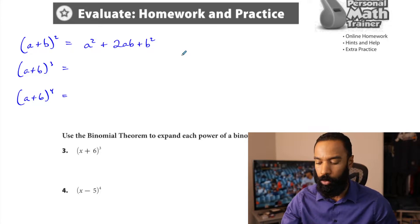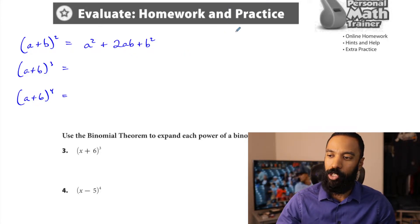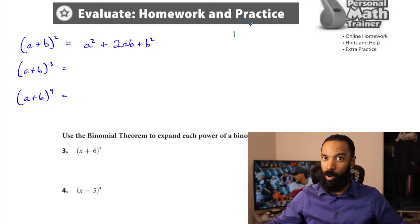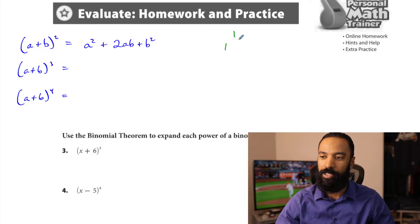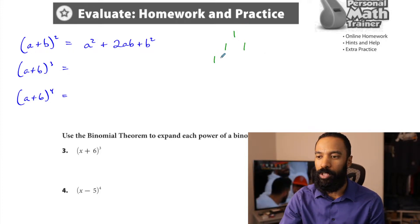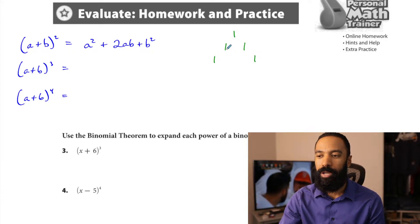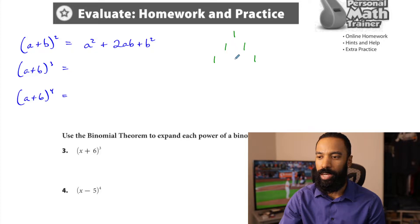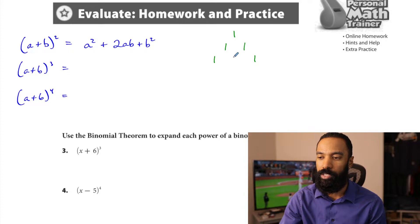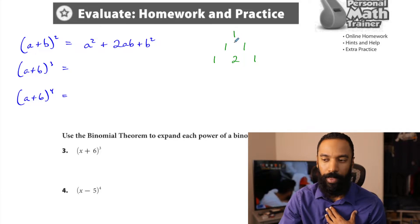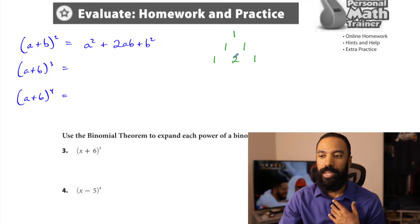At the top of the triangle is the number one. Going down the sides of the triangle is going to be ones the rest of the way. This one stems off into a one on the left and a one on the right in the next row. In the row after that, ones keep pouring down the sides, but in between any two numbers, take the sum of those two numbers. One and one gives us two in between — that's that row.